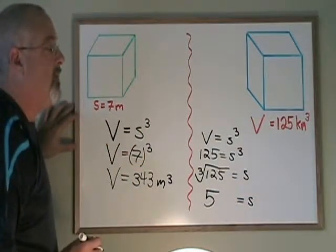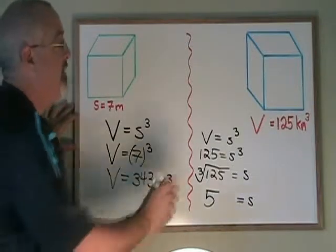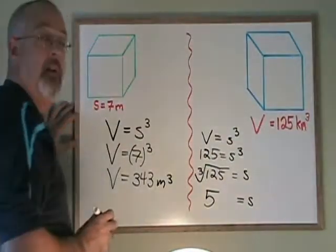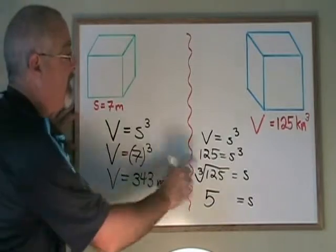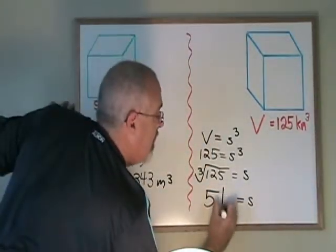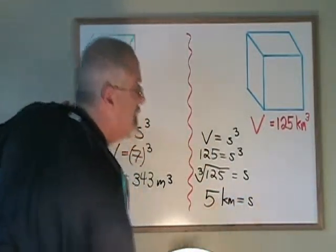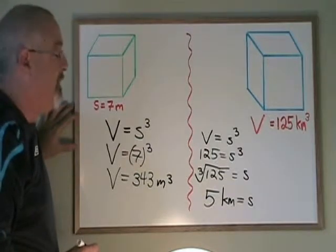All that's left is to apply the appropriate unit of measure. Since the volume of this cube was given in kilometers cubed, the side length should be given as kilometers. The side length for this cube is 5 kilometers.